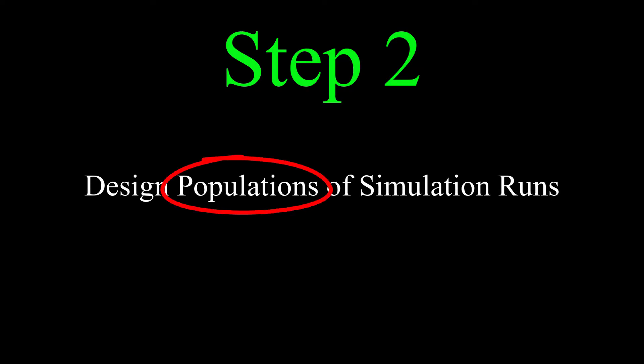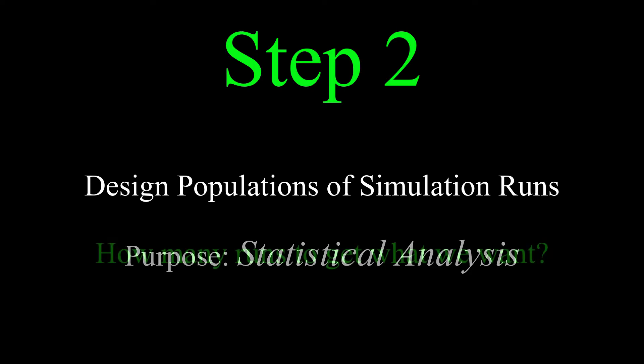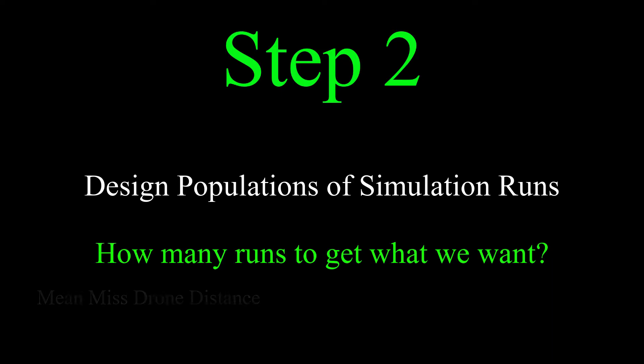Step two is to design the population of simulation runs. We have to figure out, we're going to do a whole bunch of simulation runs, and then we're going to do a statistical analysis of them to get our answers. So we have to figure out the required population size for the desired accuracy and confidence of the final result. For example, maybe we want the mean missed distance to an accuracy of plus minus 5% at 95% confidence.